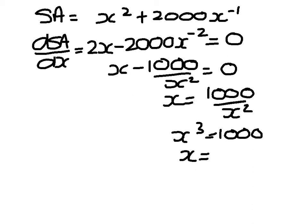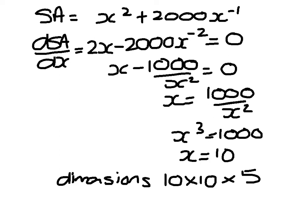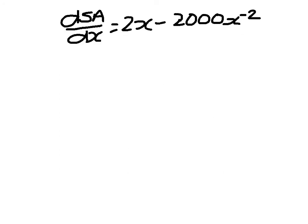x is 10. So the dimensions of the cuboid would be x by x by 500 over x squared, so 500 divided by 100, which gives h equals 5.